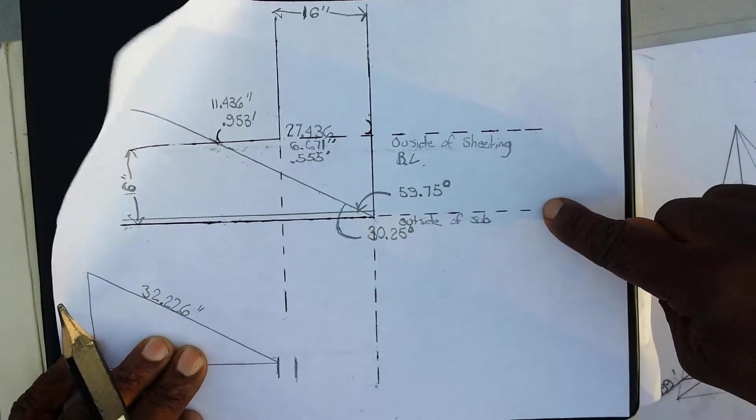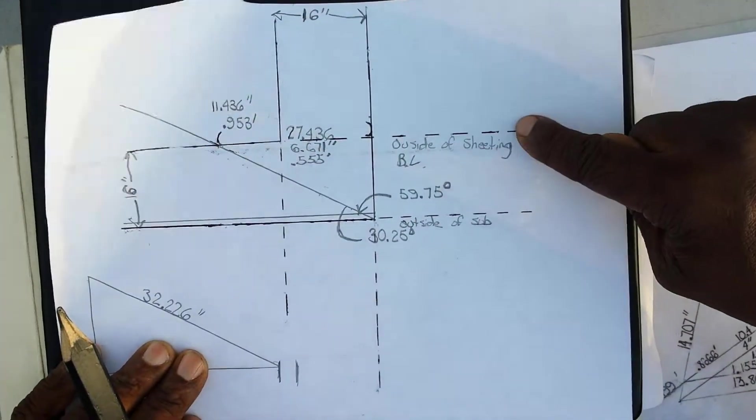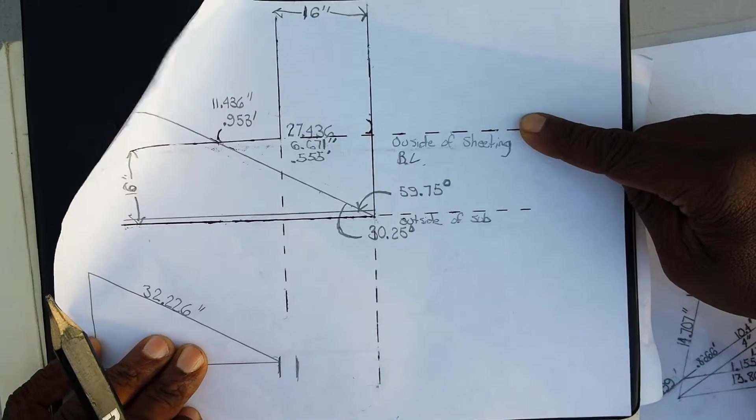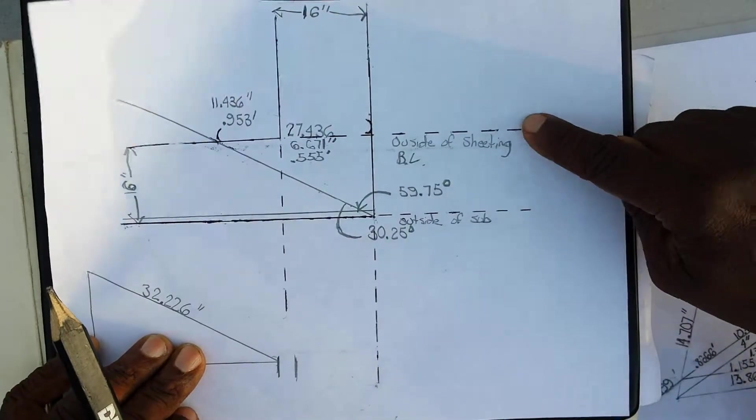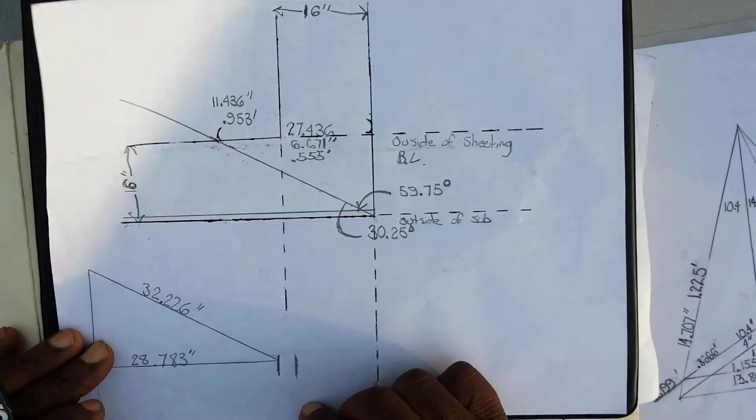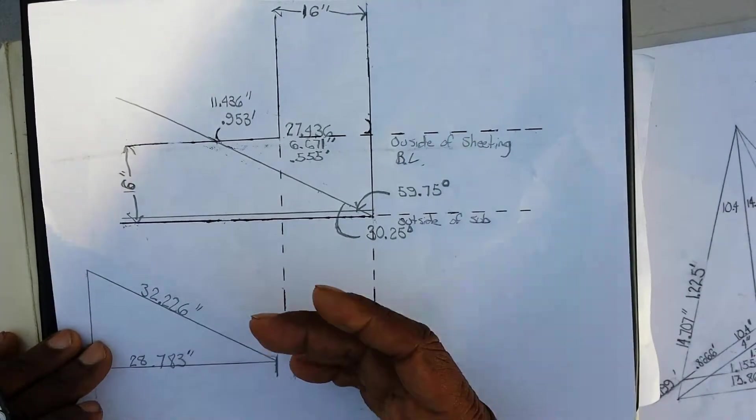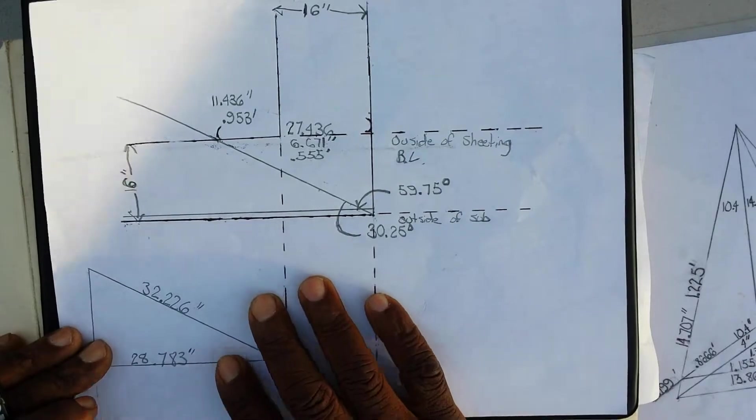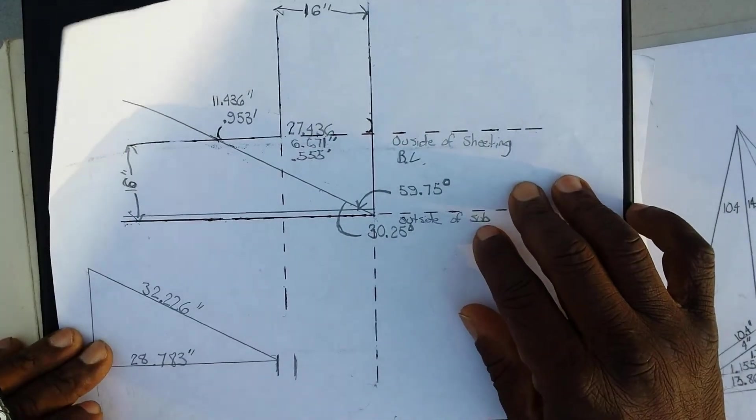And this part represents the outside of the subfascia. And this part right here represents the outside of the sheeting. Okay. So yeah, we figured out everything, y'all. We got everything figured out. We got the hips figured out, the jacks figured out. We got a lot of stuff figured out, man.